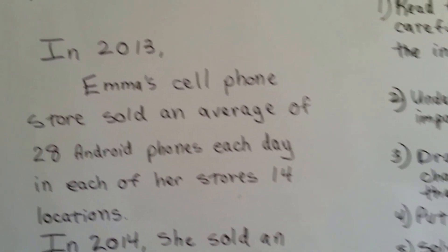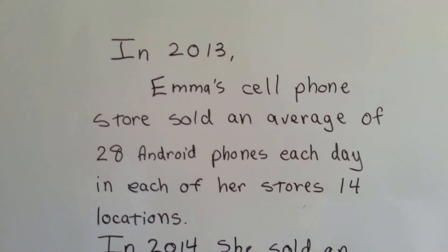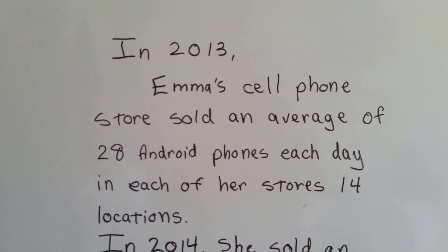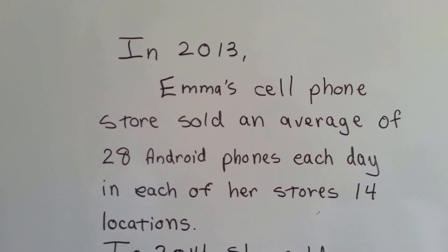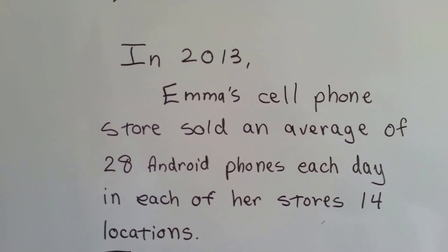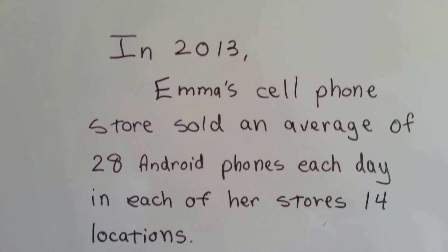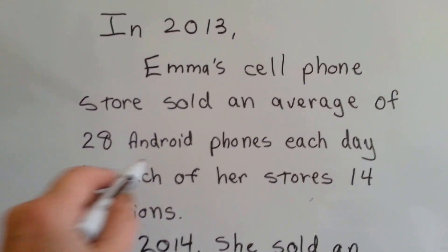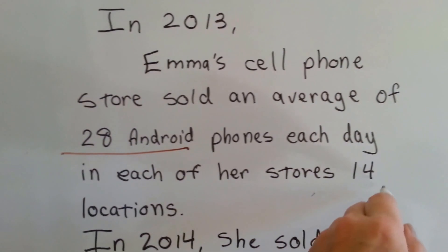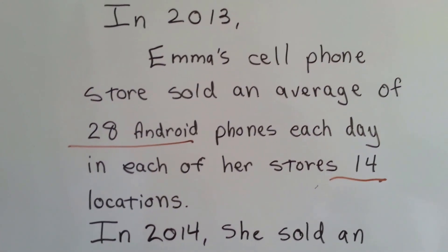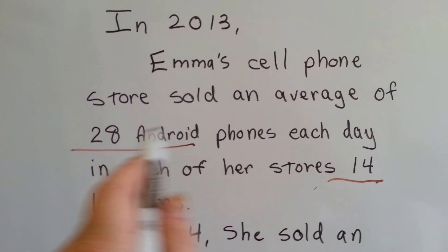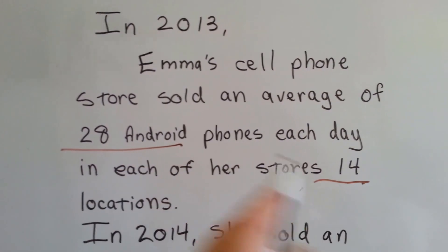So here's our first problem. In the year 2013, Emma's cell phone store sold an average of 28 Android phones each day in each of her store's 14 locations. Do you see the important information? She sold 28 phones in 14 different locations. If we need to find out how many that is, we need to multiply that right away. So that's in the year 2013.